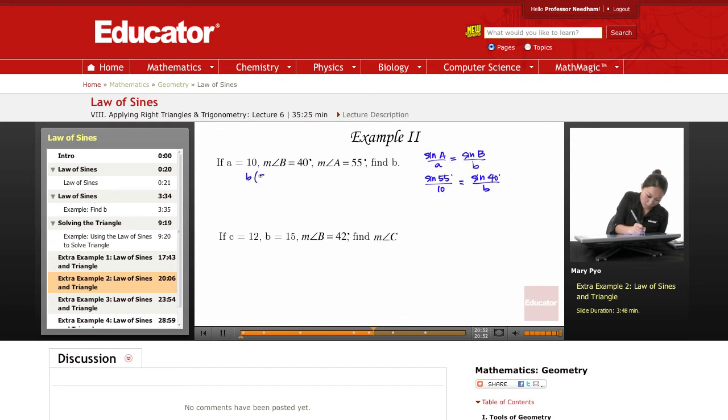B times sine of 55 equals 10 times sine of 40. Divide sine of 55. Don't separate these. Sine of 55 have to go together.